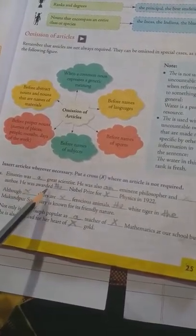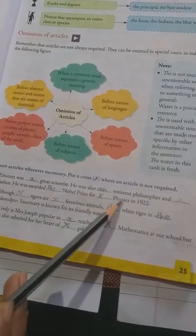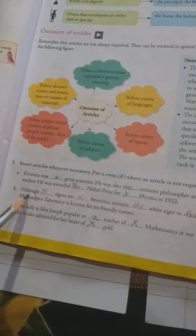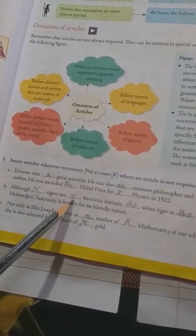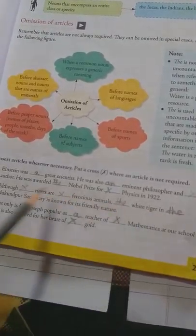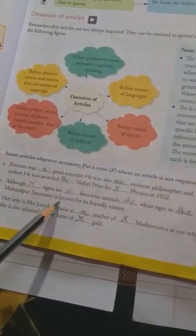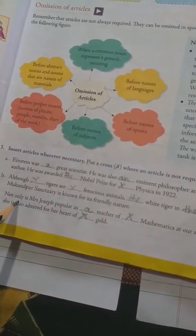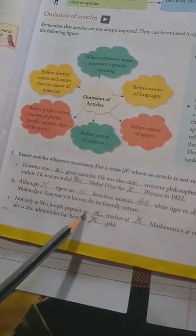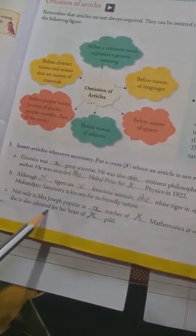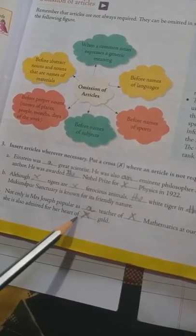B number Although cross tigers are cross ferocious animals, the white tiger in the Mupunpur sanctuary is known for its friendly nature. C number Not only is Mrs. Joseph popular as a teacher of cross mathematics at our school, but she is also admired for her heart of cross gold.